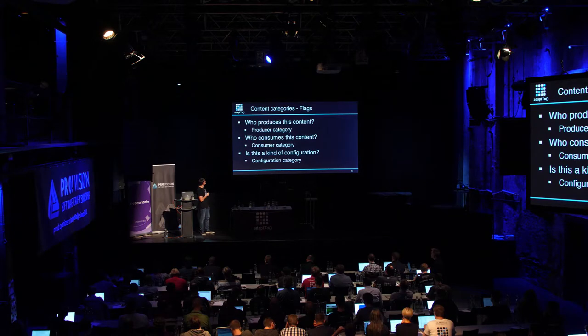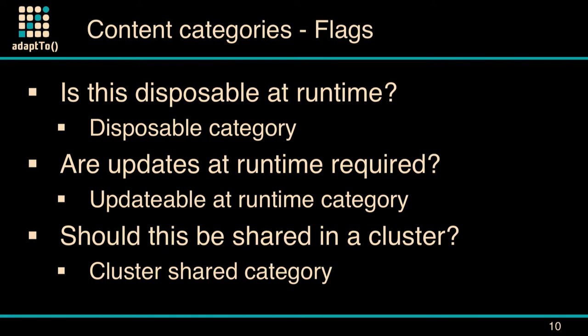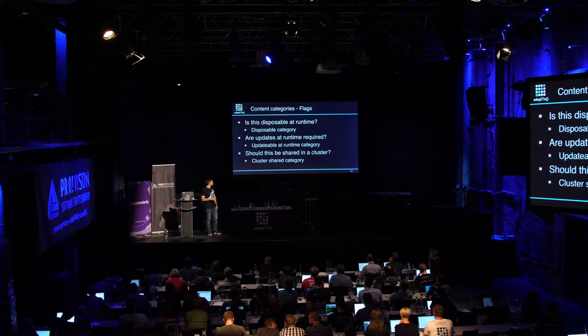We have the producer category — the question is: who produces this content? Then the consumer category, which is about the actual consumer of the content model. The configuration category asks: is this content model a kind of configuration or not? We then have the disposable category — is this disposable at runtime, like a cache? Does it hurt if the content is wiped, or can it be easily regenerated? The updatable-at-runtime category asks: do we need updates at runtime, do we need to write to this content? One example is page editing, where you obviously need to write to a page.